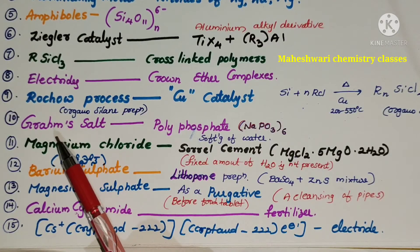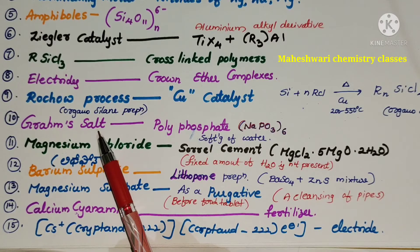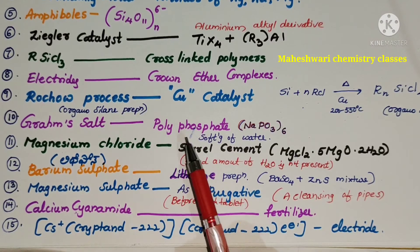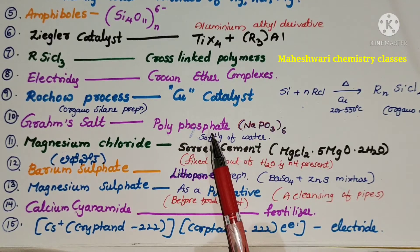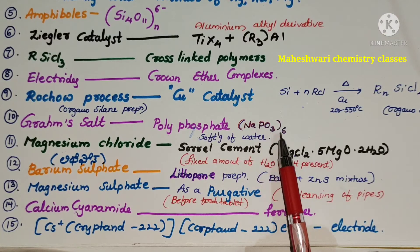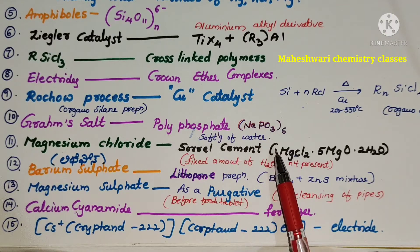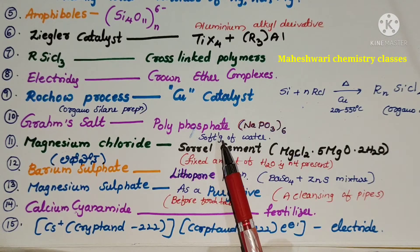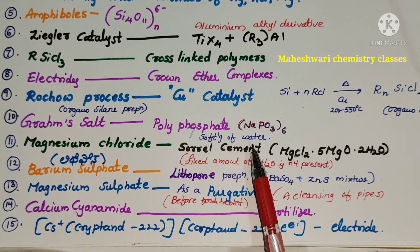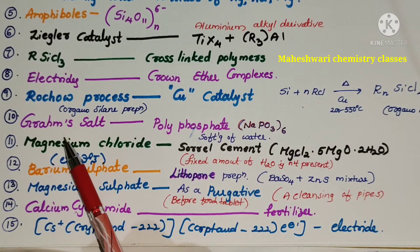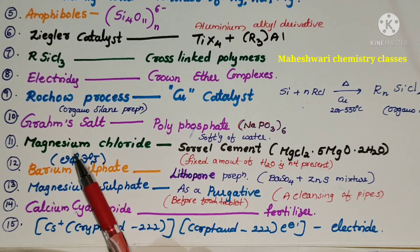Graham salt. This Graham salt is nothing but polyphosphate. Here NaPO3 taken 6, it is one type of phosphate. It is used for softening of water purpose. This is about Graham salt.